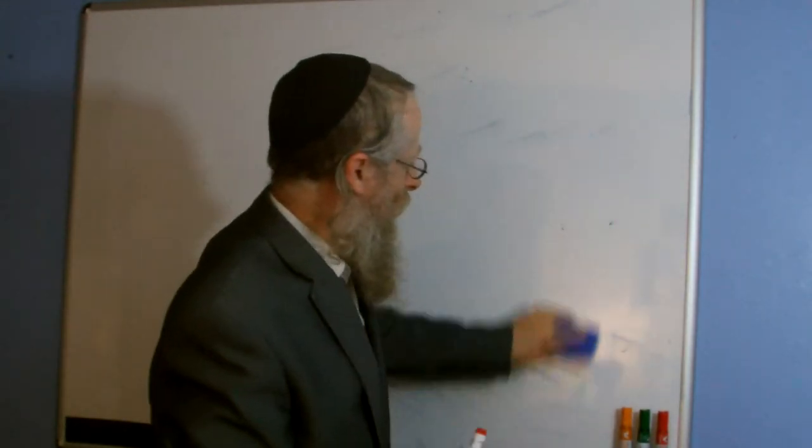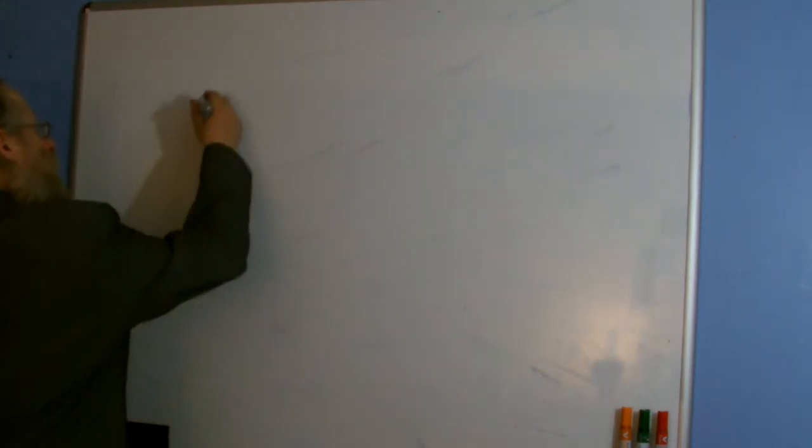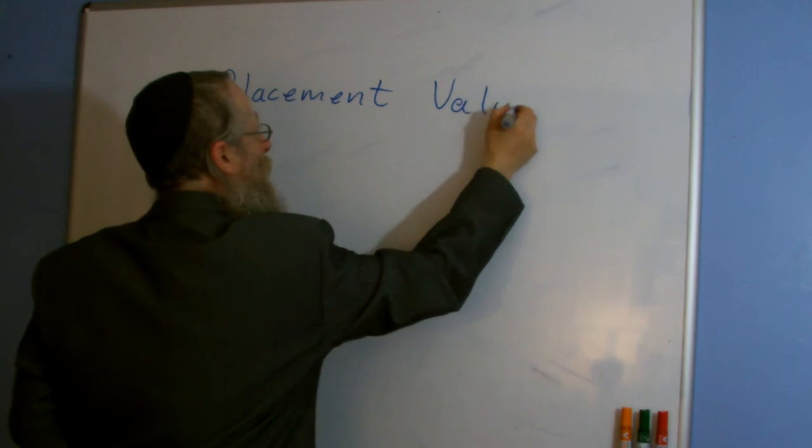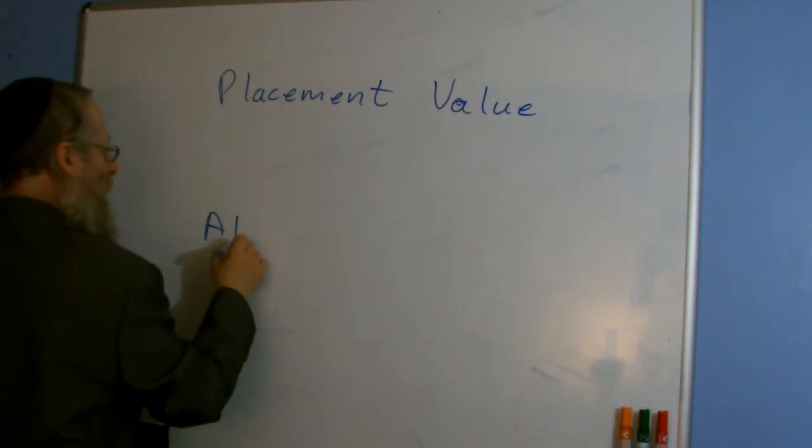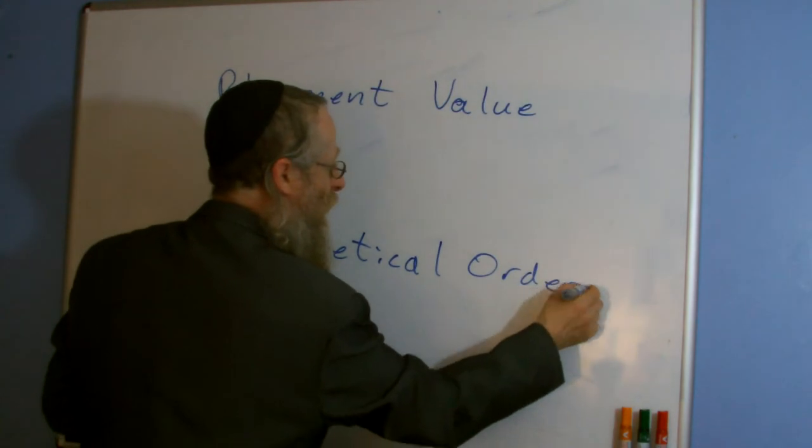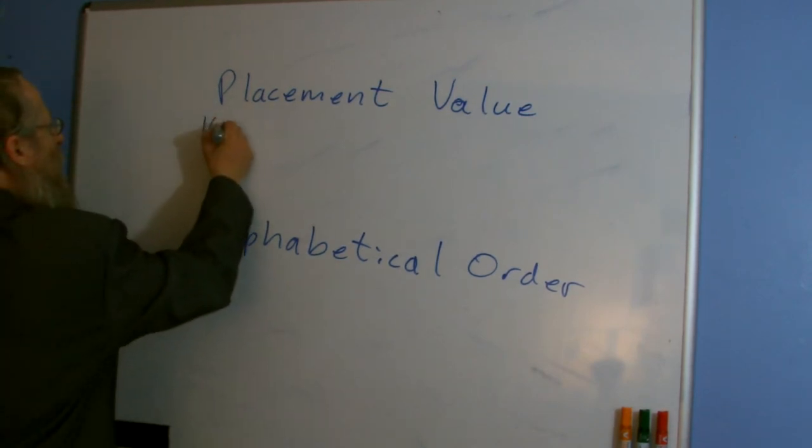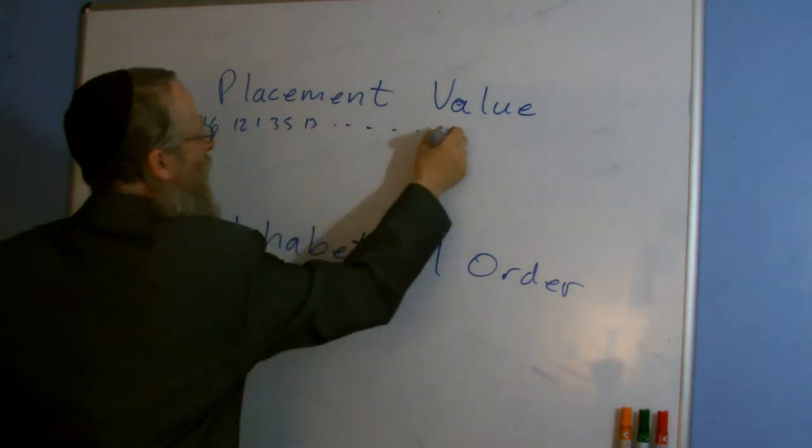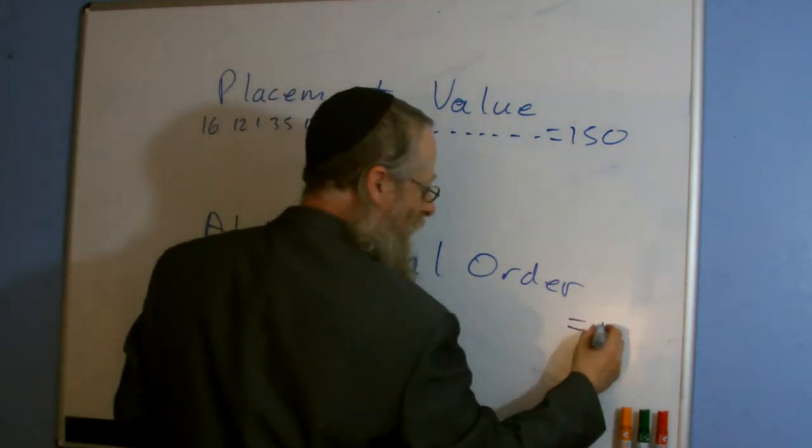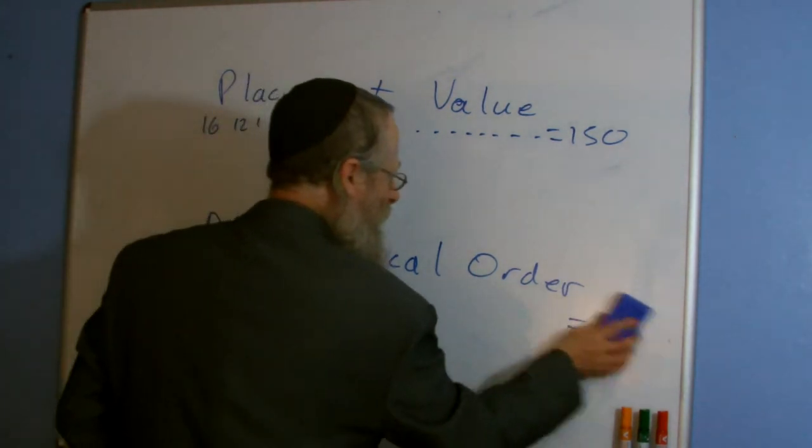I'm just going to go back to a few things with placement values. The word placement value depends on the alphabetical order. If you don't have an alphabetical order, many letters can go anywhere, then you don't have any placement. What does this equal? 16, 12, 1, 3, 5, 13. If you add it all together, you'll get 150. And if you do the same for alphabetical order, you'll get 150. Quite interesting.